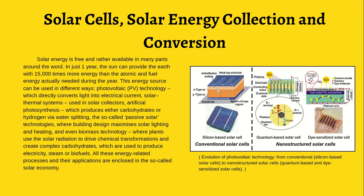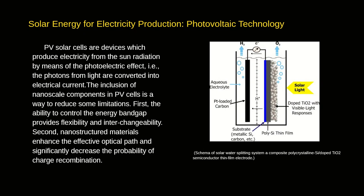Shown here is an evaluation of photovoltaic technology from conventional to nanostructured solar cells. Solar energy for electric production — photovoltaic technology. PV solar cells are devices which produce electricity from solar radiation by means of the photoelectric effect; the photons from light are converted into electrical current. The inclusion of nanoscale components in PV cells is a way to reduce some limitations. First, the ability to control the energy band gap provides flexibility and interchangeability. Second, nanostructured materials enhance the effective optical path and significantly decrease the probability of charge recombination. Also shown is a schema of solar water splitting using a composite polycrystalline system.